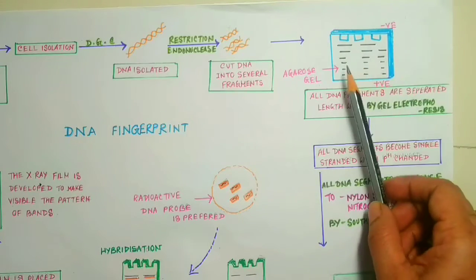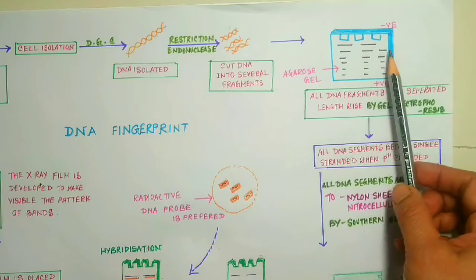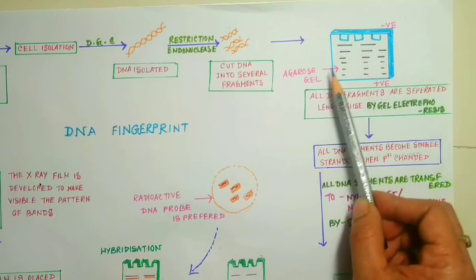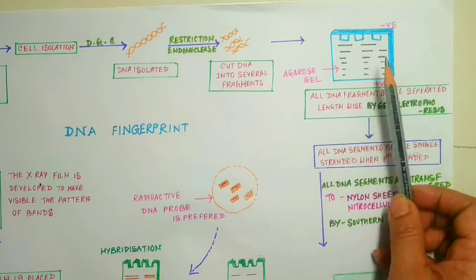At the same time, in this gel electrophoresis process, when the pH is changed, the DNA become single-stranded DNA.